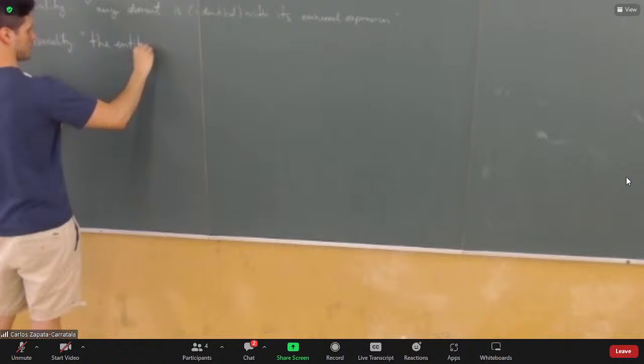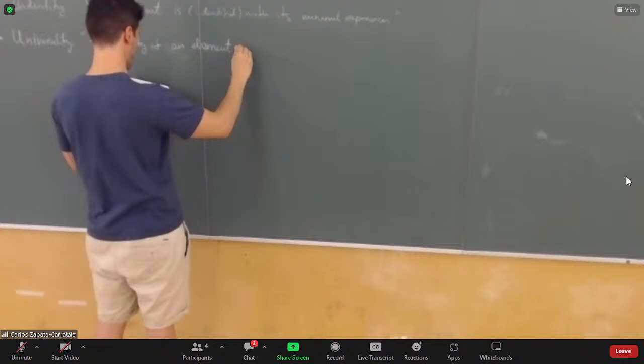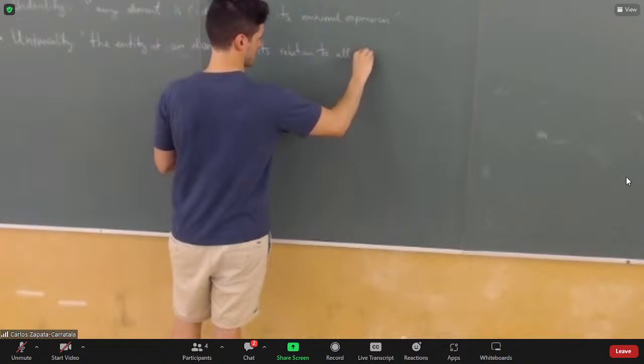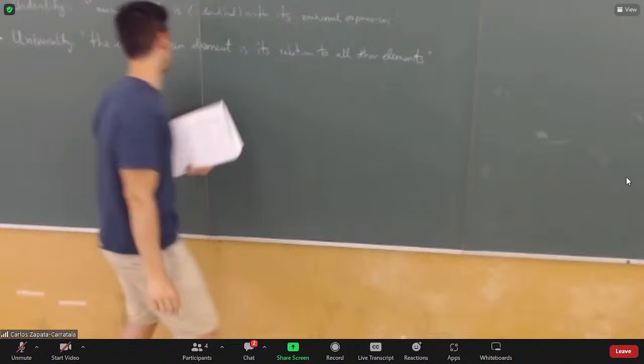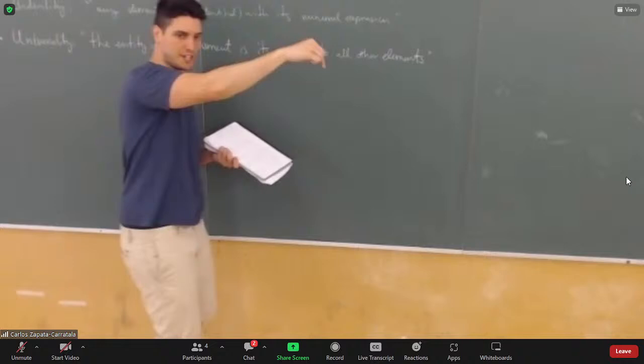The third principle is the principle of universality. It says: any element is its relations to all others. We call it universality because what makes this object this object is how it relates to all the other objects. These three are kind of like an ontology — the principles of ontology — describing what things we are going to consider and what properties they should have.